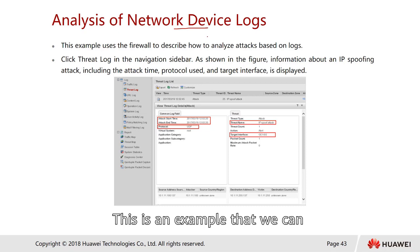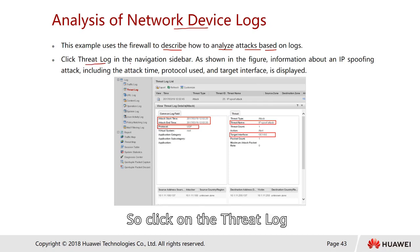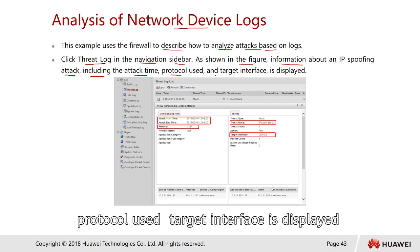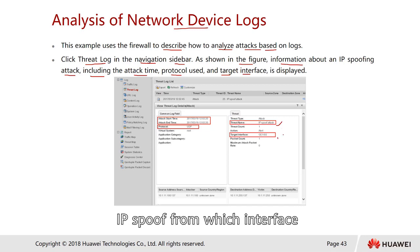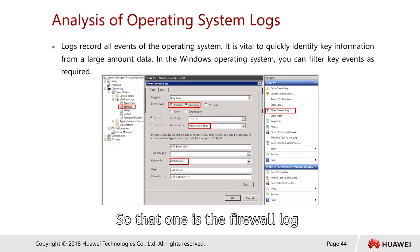Here is an example of analysis from a network device log — specifically a firewall log. Click on the Threats Logs in the navigation sidebar. Information about the IP spoofing attack is displayed, including attack time, protocol used, and target interface. This example shows an IP spoof: which interface it came from, what time the attack happened, and what ports were targeted — in this case, UDP.